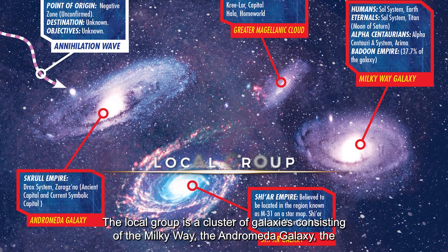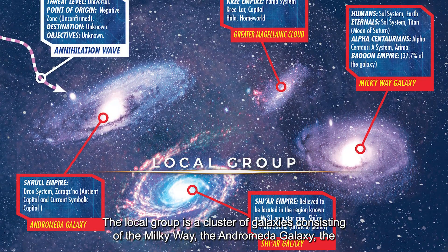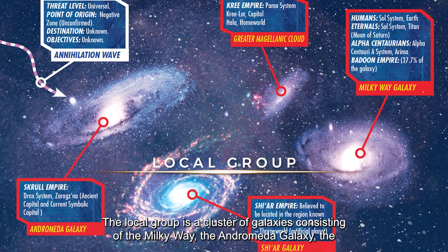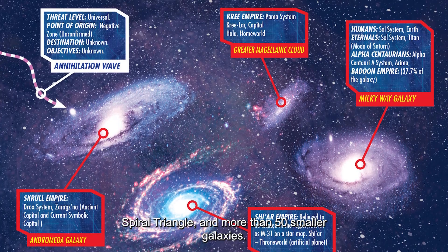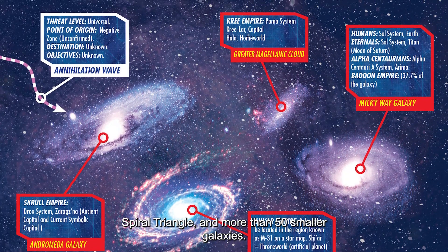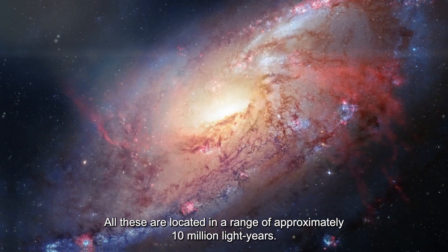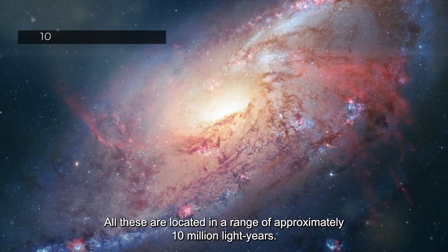Local Group. The Local Group is a cluster of galaxies consisting of the Milky Way, the Andromeda Galaxy, the Spiral Triangle, and more than 50 smaller galaxies. All these are located in a range of approximately 10 million light years.